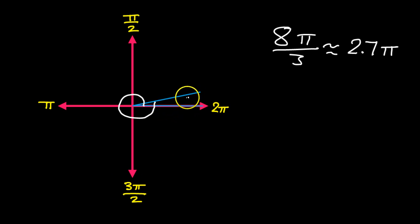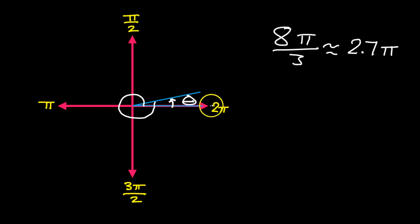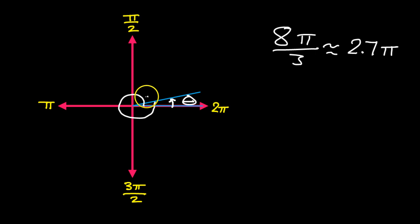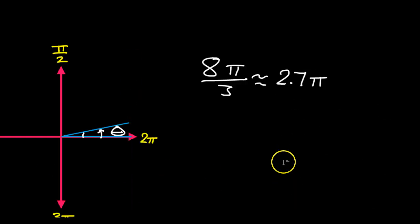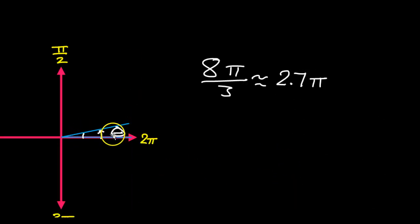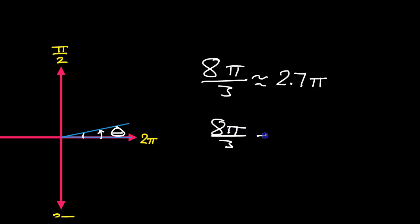Now we're going to kill two birds with one stone, because the reference angle will also be a coterminal angle that's within the range from 0 to 2 pi. So let's find this reference angle, and that will also be our coterminal angle. You see that it's gone more than 2 pi, so if you were to subtract 2 pi, that would just eliminate the extra trip all the way around, and it would just leave the leftover bit that is the reference angle. So if we take 8 pi over 3 and subtract 2 pi, that should just leave the reference angle.